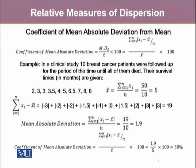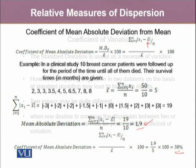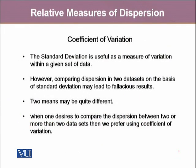The third relative measure of dispersion is the coefficient of mean absolute deviation from the arithmetic mean, which can also be calculated using the median. In an example of 10 breast cancer patients whose survival times ranged from 2 to 8, the mean deviation turned out to be 1.9. The coefficient of mean absolute deviation is mean absolute deviation divided by the arithmetic mean, multiplied by 100, which turned out to be 38%.